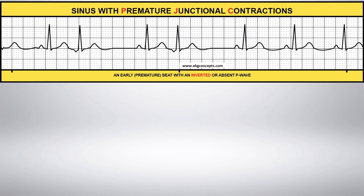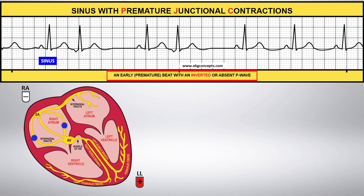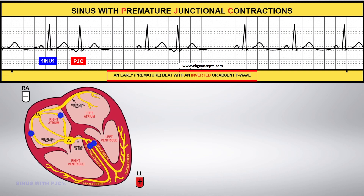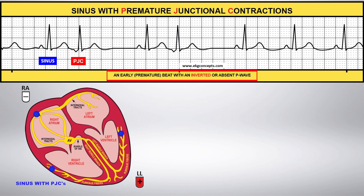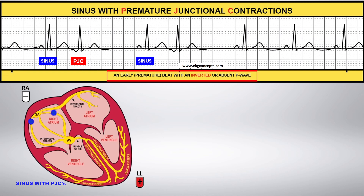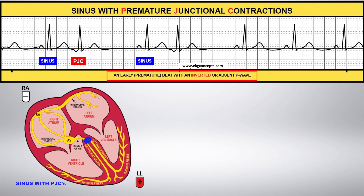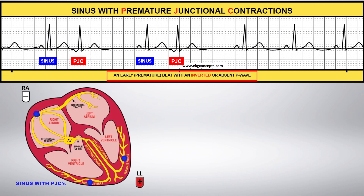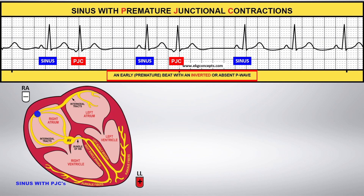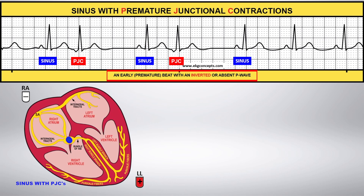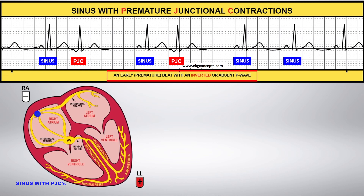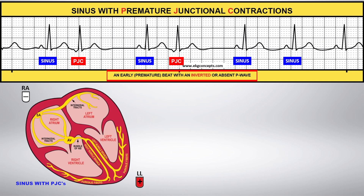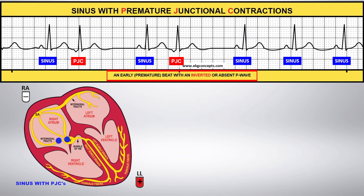Sinus with PJCs occurs when a premature beat originates in the AV node or the tissue surrounding it. The impulse occurs before the next beat of the underlying rhythm. Since the impulse originates from the AV node, it travels backward toward the atria and toward the negative lead, which causes the P wave to be inverted.